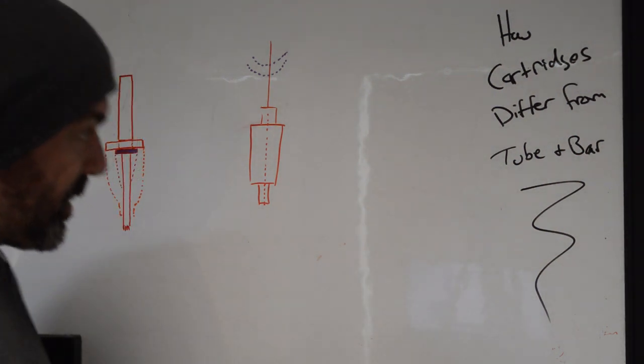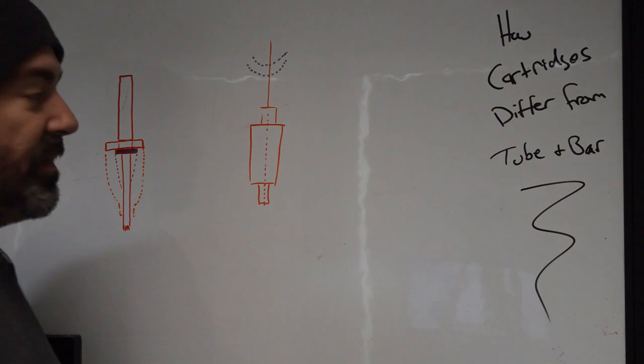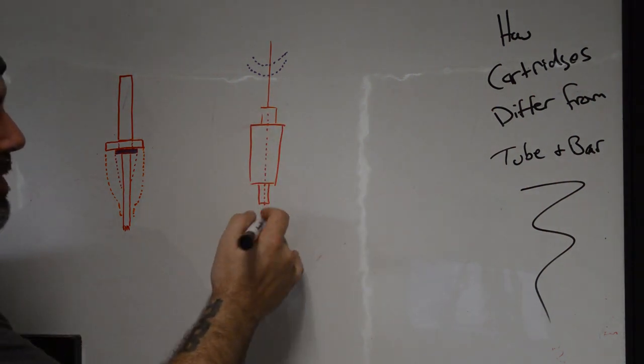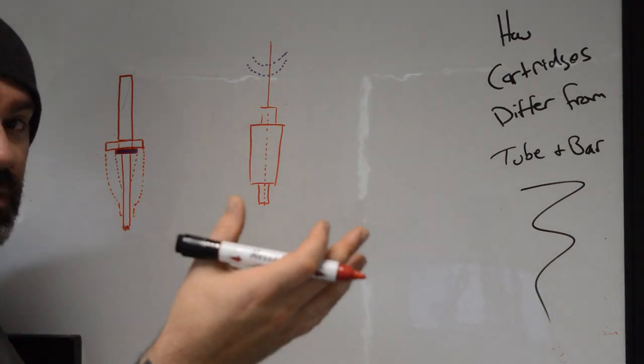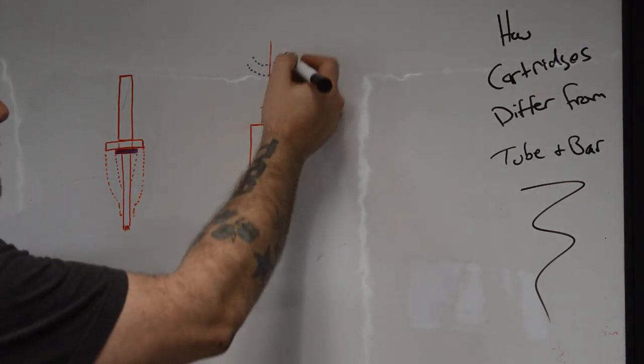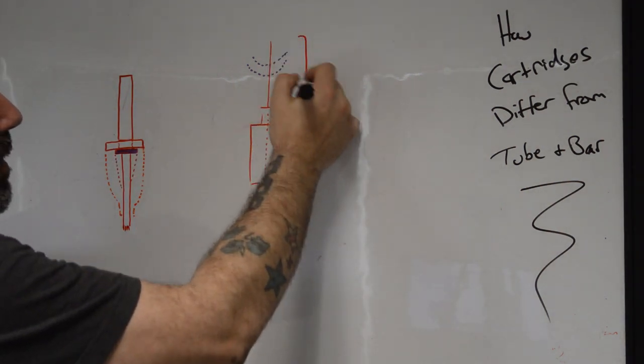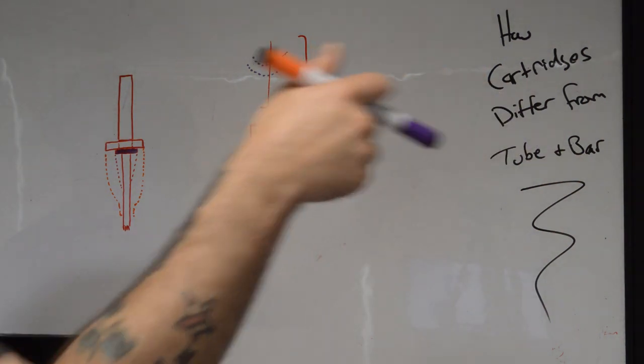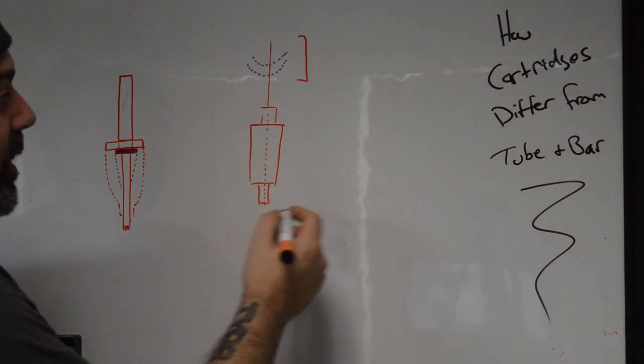So when we start thinking about our traditional setups, the tube and bar setup is really simple, right? You have an encasing with a guide, a tube tip that is fit to the width of your needle. And then there's rubber bands that are utilized to apply tension to the back of that tube by holding the needle against it, which is going to control your ink flow, right?